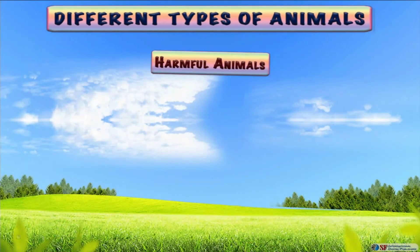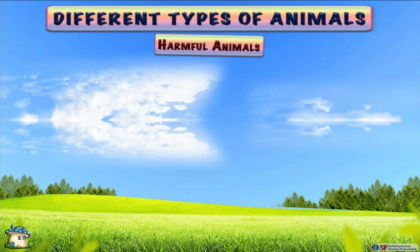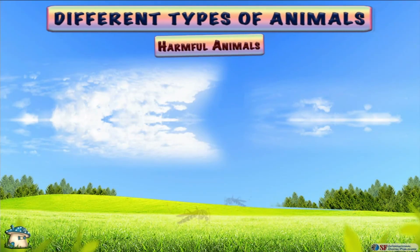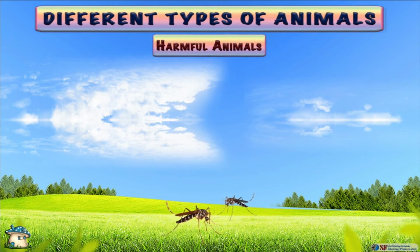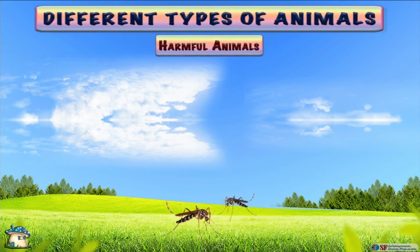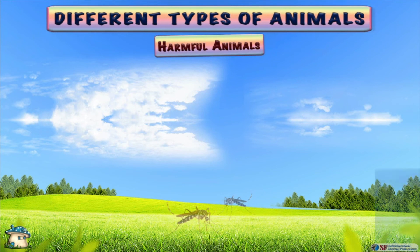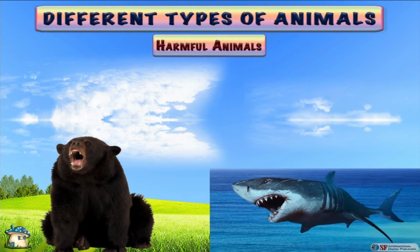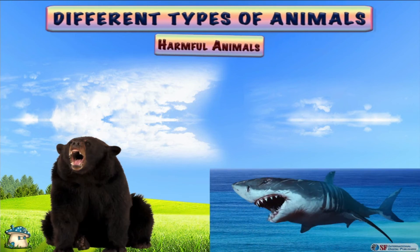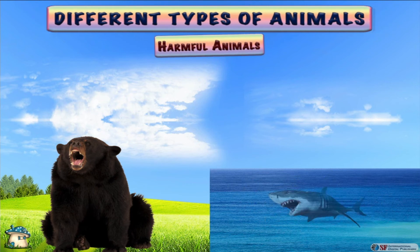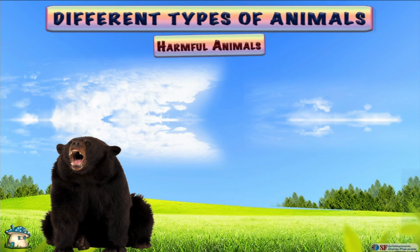Some animals are harmful because they carry germs and make us sick. An example is mosquitoes, which kill between two to three million people every year. Some other animals are harmful as they can attack and kill us — examples are sharks and bears.